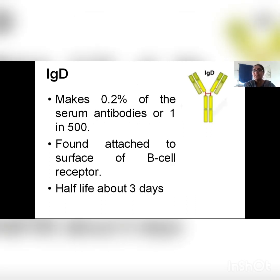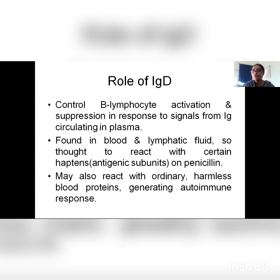Coming to IgD: it is 0.2% of serum antibodies, or 1 in 500 immunoglobulins. It is found attached to the surface of B-cell receptors — B lymphocytes which provide the humoral response. It has a half-life of about three days. The role of IgD is to control B lymphocyte activation and suppression — it is like a switch that can start the synthesis and cloning of B lymphocytes, or suppress them. It also brings about autolysis of B lymphocytes that have been secreted and are no longer needed. IgD is the one controlling B lymphocytes.